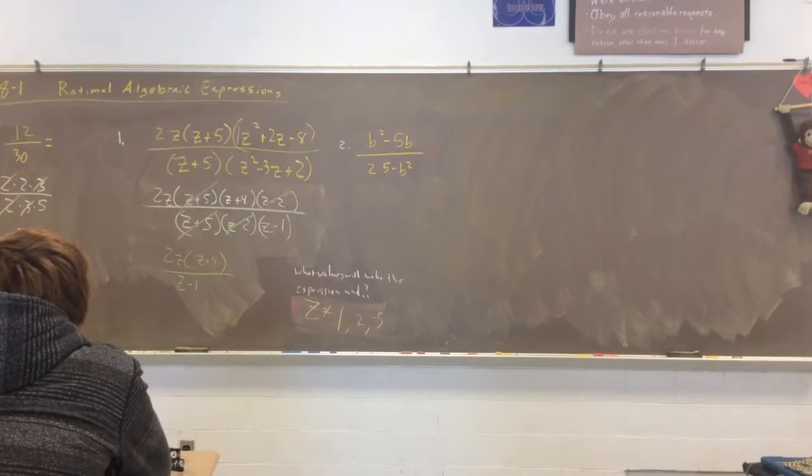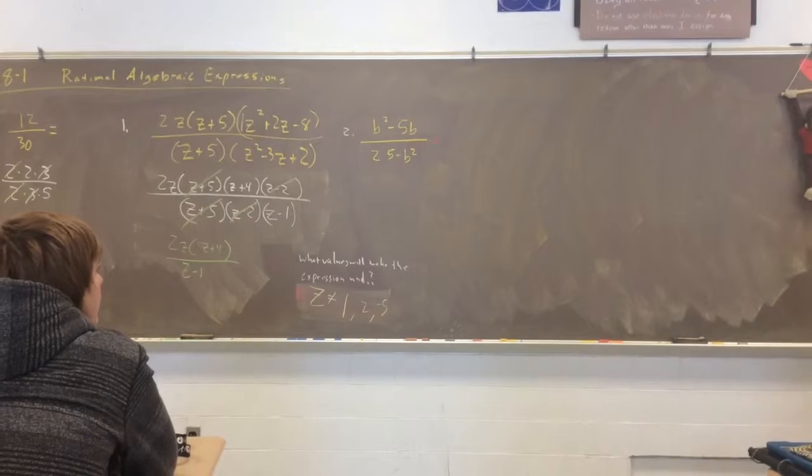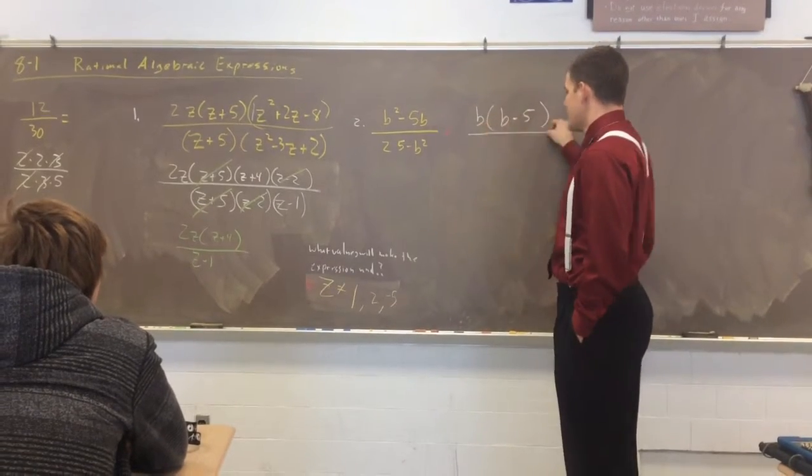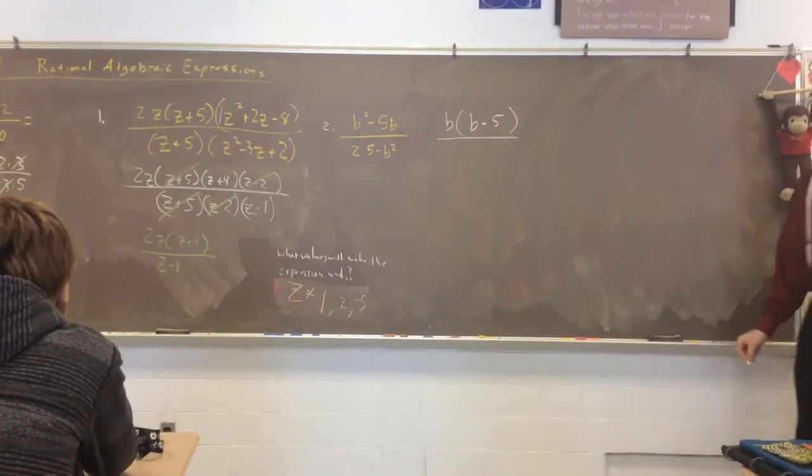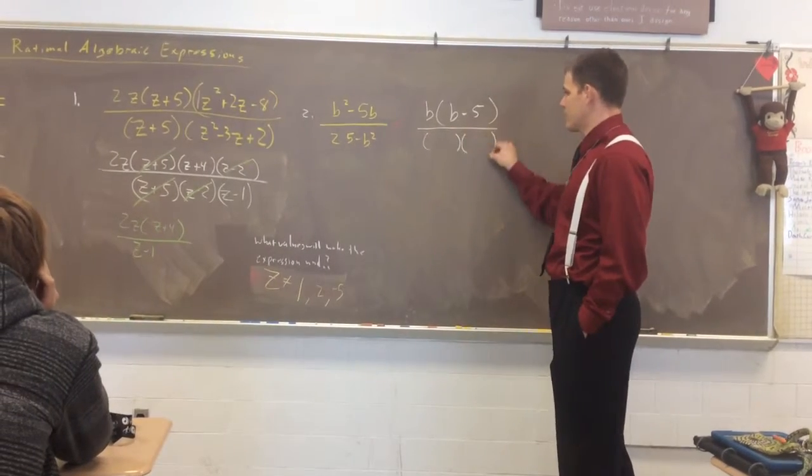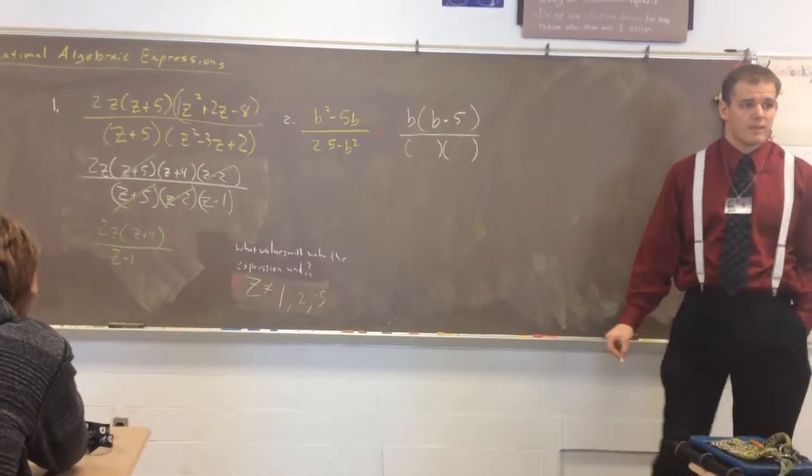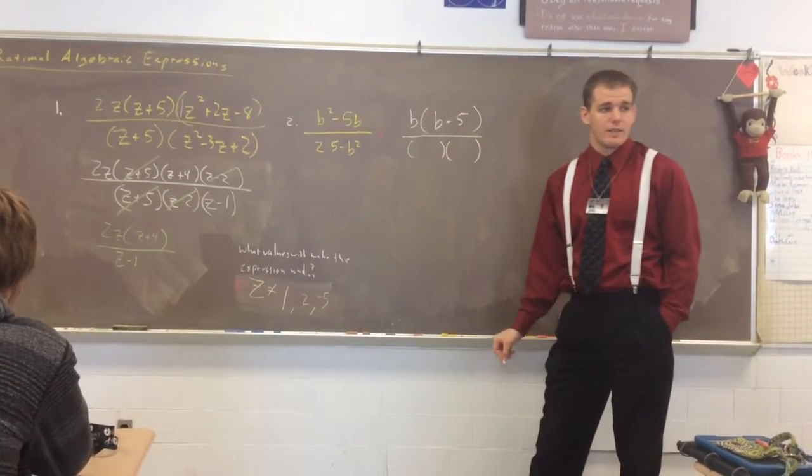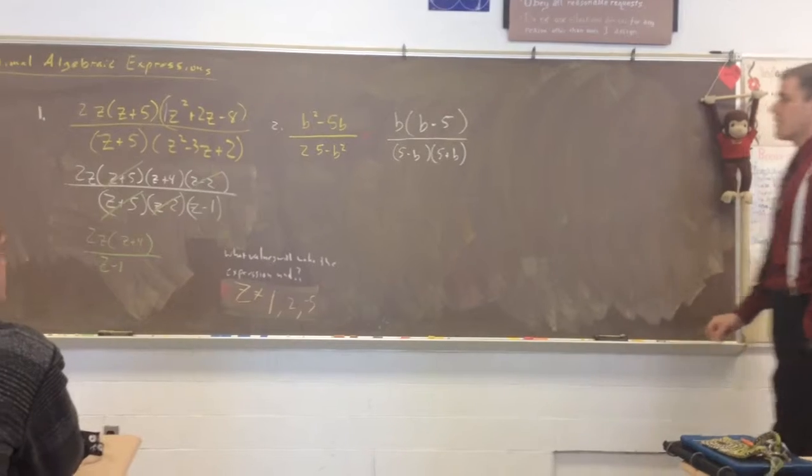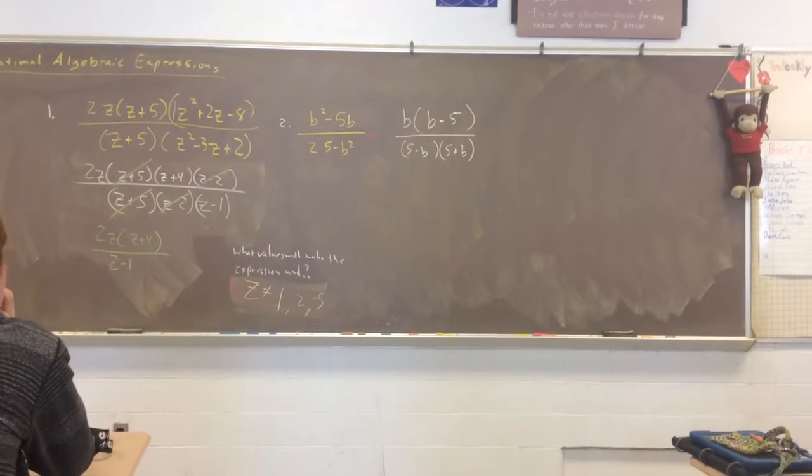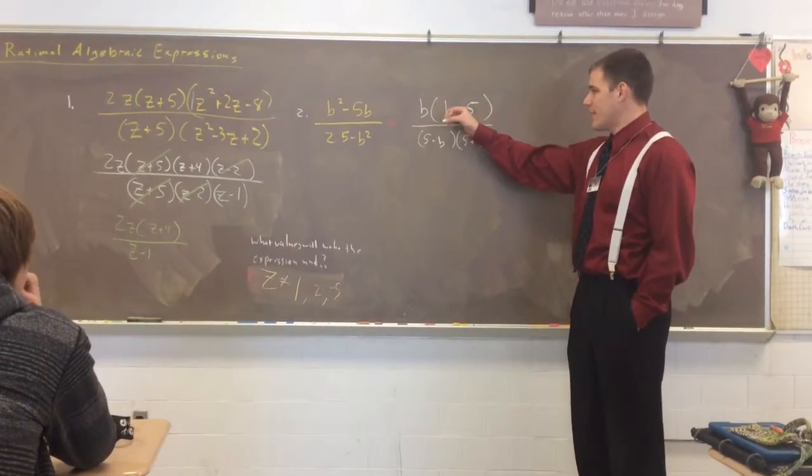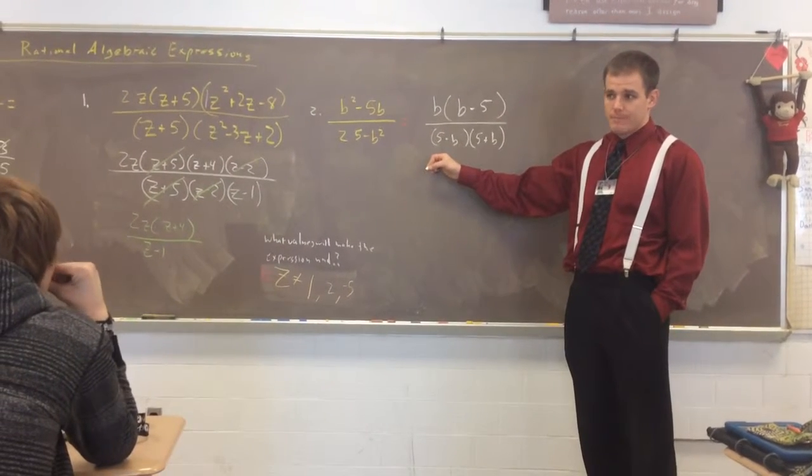What's the greatest common factor on top? B. So, it's going to be B times B minus 5. The bottom is difference of squares. It's 25 minus B squared. 5 minus B and 5 plus B. Now, is there anything that we can cancel on top and bottom? Not yet. Is B minus 5 the same as 5 minus B? No. Is it close, though? Yeah.